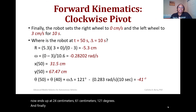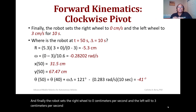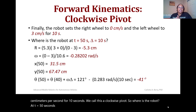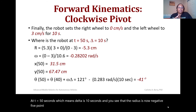Finally, the robot sets the right wheel to 0 cm/s and the left wheel to 3 cm/s for 10 seconds — this is called a clockwise pivot. Where is the robot at t = 50 seconds (delta = 10 seconds)? The radius is now −5.3 cm for the ICR and omega is −0.28 radians per second.